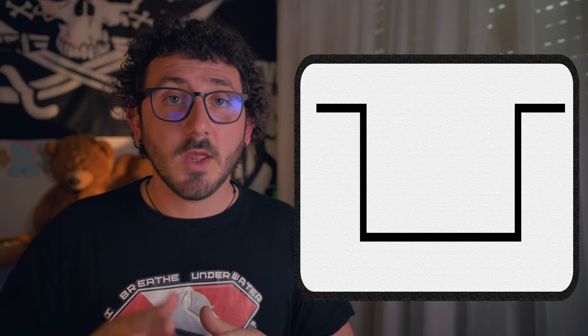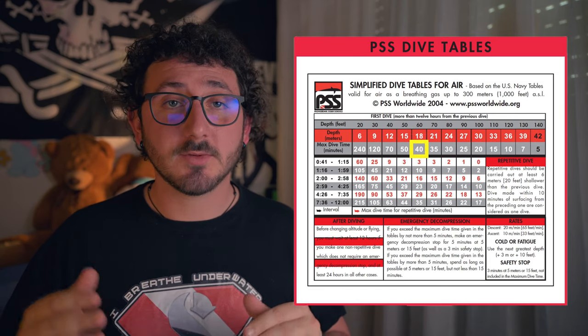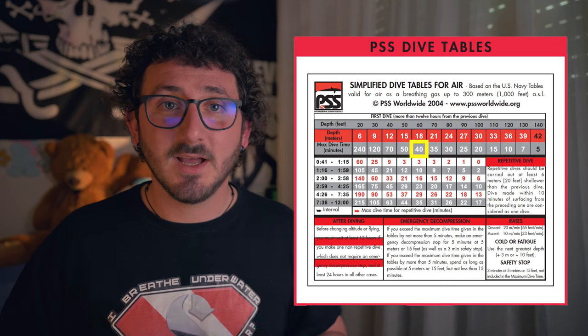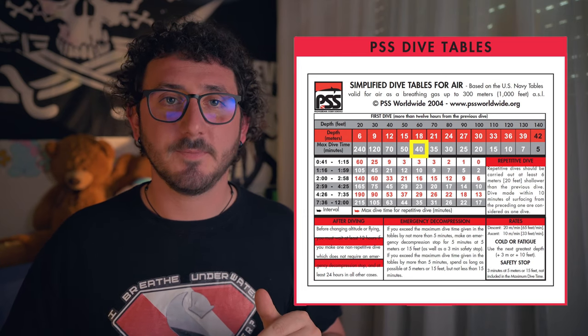The first reason why you need a dive computer is accuracy. If you are using dive tables, it means that you are using a square profile to plan your dives. Your maximum bottom time is calculated like you were at your max depth for the entirety of your dive, not crediting you for the shallower parts. For example, if we want to do a dive at a maximum depth of 18 meters using the PSS tables, we can see that we have a maximum bottom time of 40 minutes. But how many times do you dive at the same depth for the entirety of your dive time? Almost never!